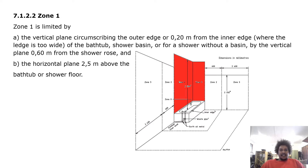Zone 1 is the vertical plane circumscribing the outer edge — or 0.2 meter from the inner edge where the ledge is too wide — of the bathtub, shower basin, or for a shower without a basin, by the vertical plane 0.6 meter from the shower rose, and the horizontal plane 2.5 meters above the bathtub or shower floor. As indicated in red, that is the outside edge up to 2.5 meters above the bath, or in the case of a shower, 0.6 meter from the shower rose.